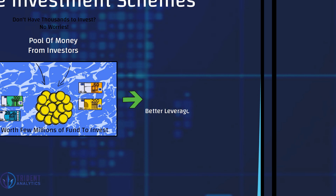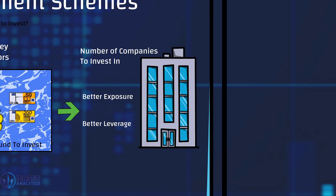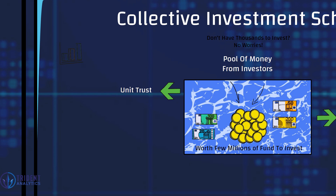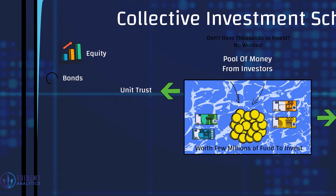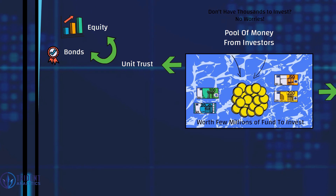A very common type of collective investment scheme in Malaysia is unit trust. Unit trust is a form of collective investment scheme where, when you pool your money together, the fund can invest in equity, in bonds, or in a balanced way — meaning a portion goes to equity and the balance goes to bonds.